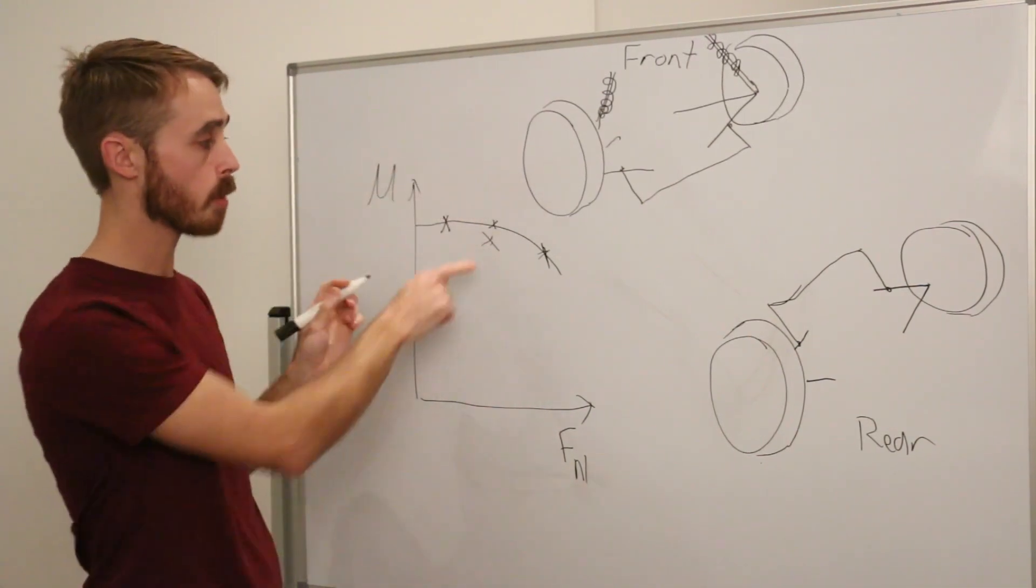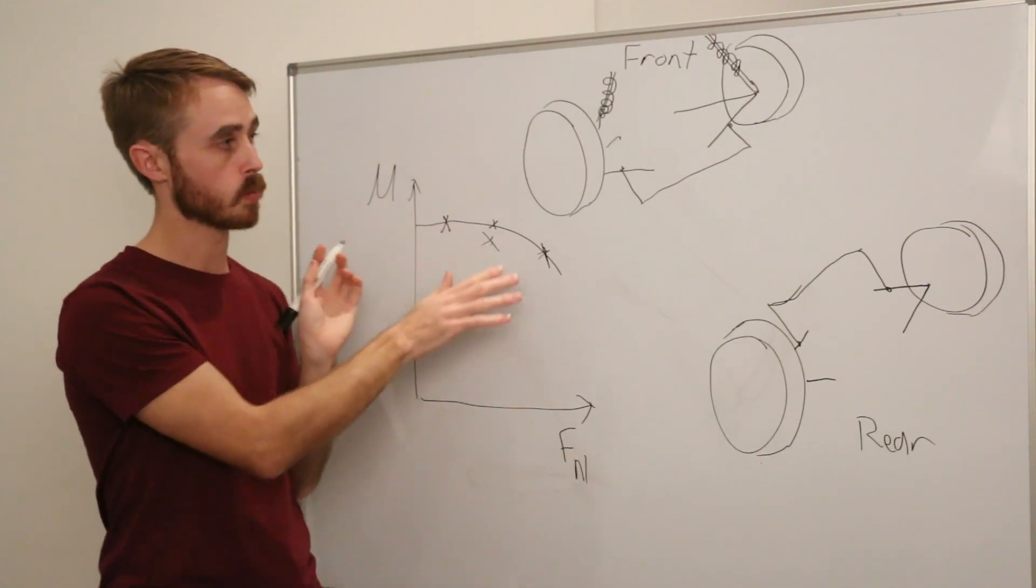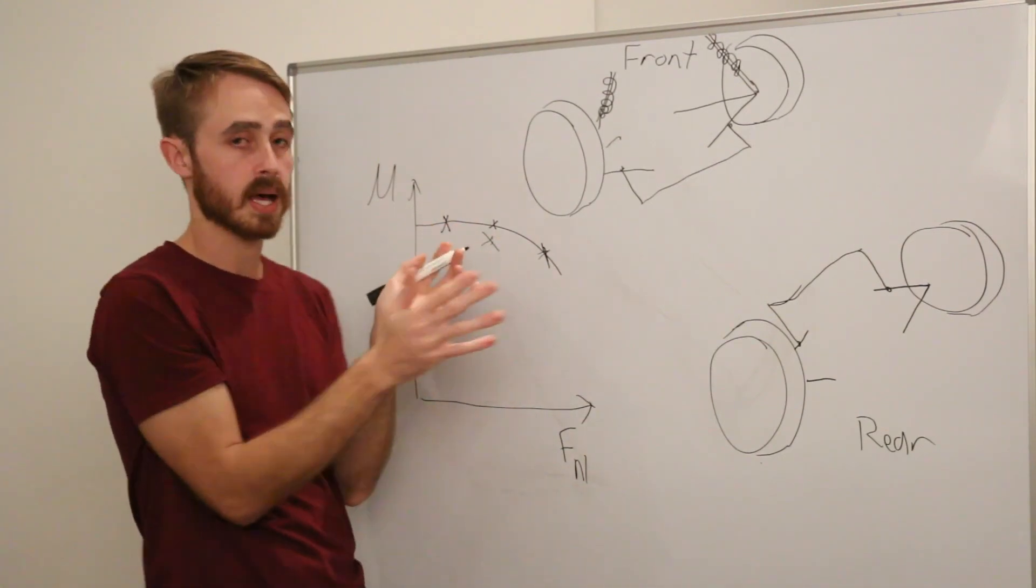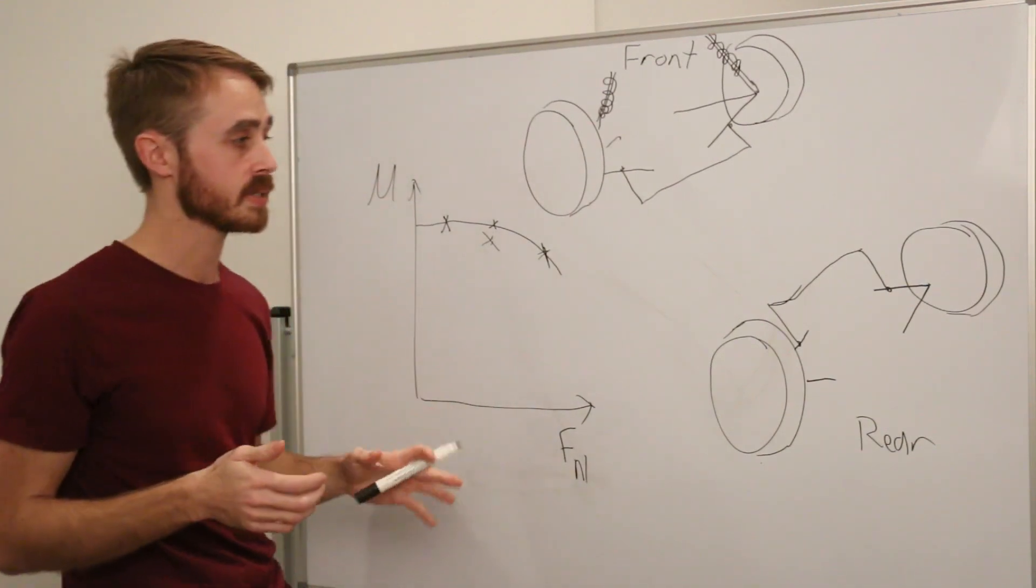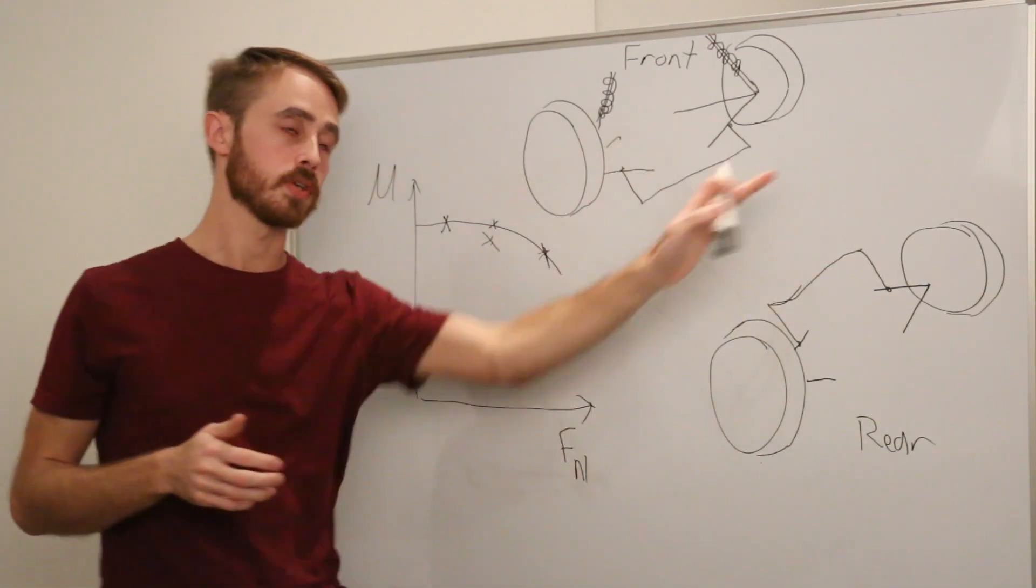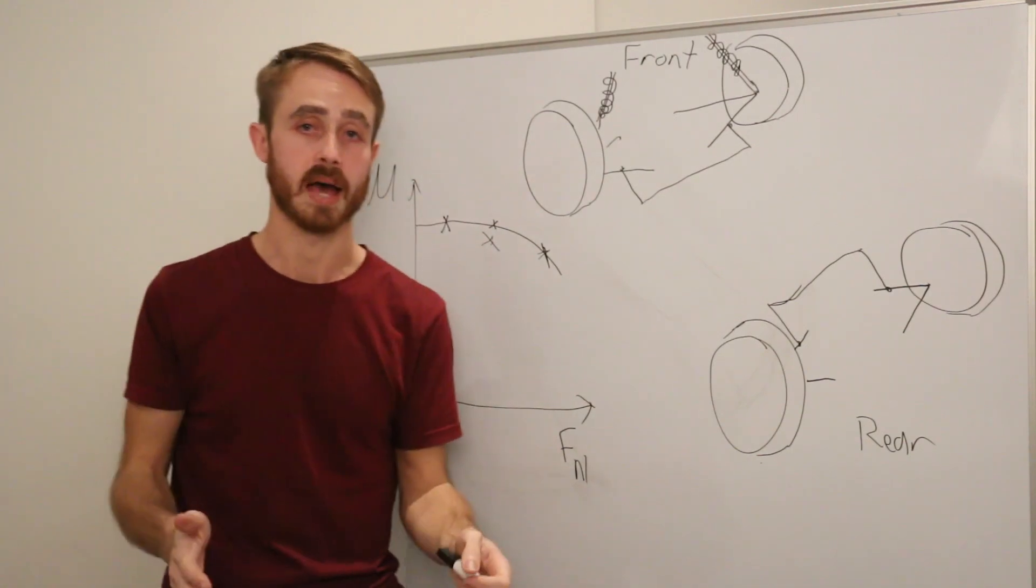We can see that that is sub-optimal when compared to what it would be if it was just a singular tyre. Now what's the meaning of all this? Basically what it means is that the more weight transfer you have the less grip you have.